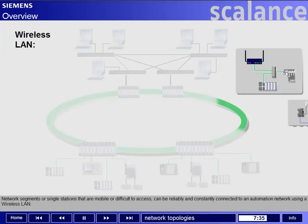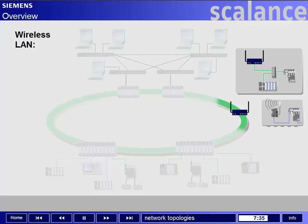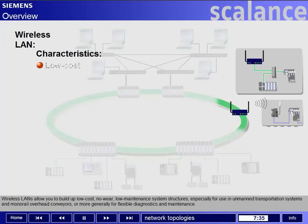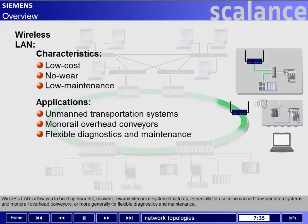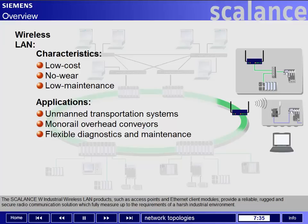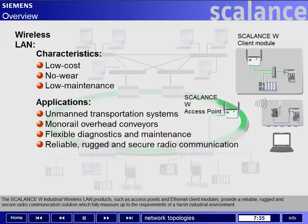Network segments or single stations that are mobile or difficult to access can be reliably and constantly connected to an automation network using a wireless LAN. Wireless LANs allow you to build up low-cost, no-wear, low-maintenance system structures, especially for use in unmanned transportation systems and monorail overhead conveyors, or more generally for flexible diagnostics and maintenance. The Scalance W industrial wireless LAN products — such as access points and Ethernet client modules — provide a reliable, rugged, and secure radio communication solution which fully measures up to the requirements of a harsh industrial environment.